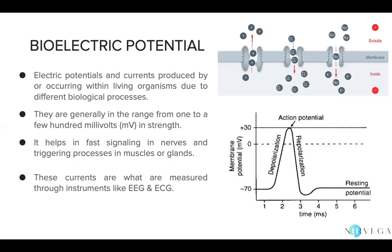When we discuss the nervous system and understand the fundamental unit — the neuron — we will see how integral bioelectric potentials are to our functioning as human beings. To give a basic understanding: when we talk about bioelectric potential, the normal human cell has a resting potential. The resting potential — the electric potential of the cell at its normal stage — is negative, usually around minus 70 millivolts. That is a very weak amount compared to electrical potentials we see in everyday appliances, but because it is in proportion to the size of the cell, it is very potent.